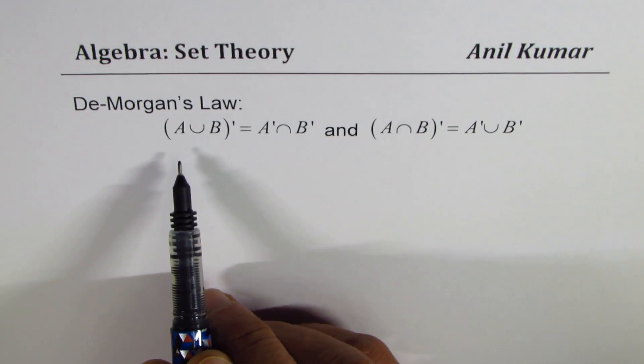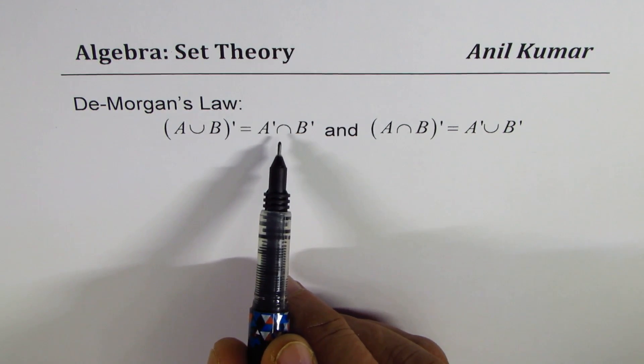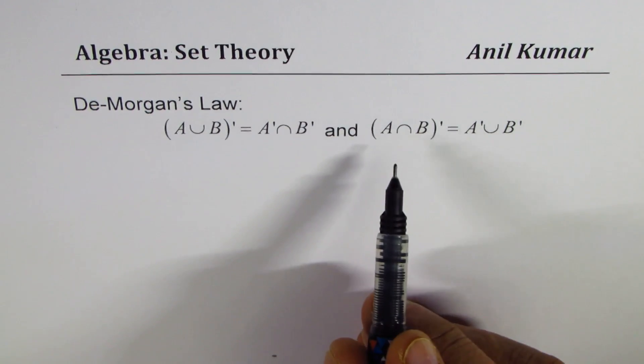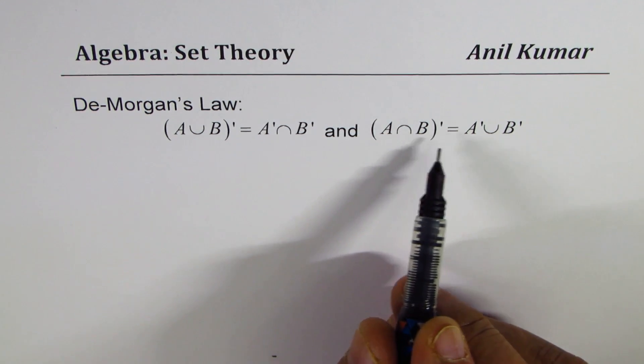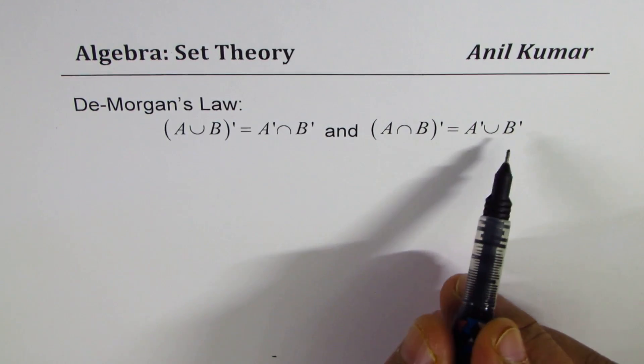The first one is that A union B complement is equal to intersection of complement of A and B. And the second part is that complement of intersection of A and B is equal to union of complements of A and B.